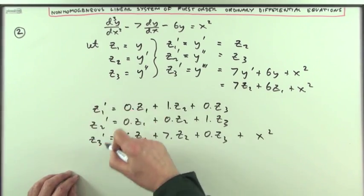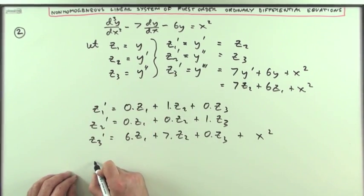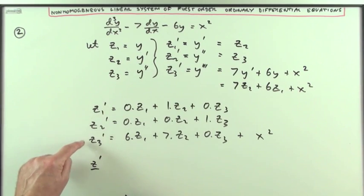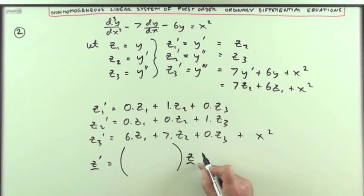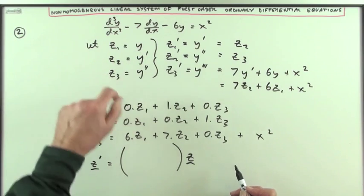Those three separate functions, those derivatives, I'll just write as a vector, having those individual parts as the components. So z dashed equals this matrix times, and z will stand for those three as its components.